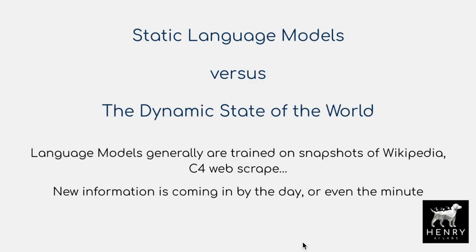Currently we have static language models or static natural language processing systems, meaning that the models are trained on snapshots of time for these datasets. So you take a Wikipedia snapshot of February 2019 or a web scrape of February 2019, and this is the information used to train these NLP systems. Compare that to the dynamic state of the world where we have new information coming in every day or even every minute depending on the domain.